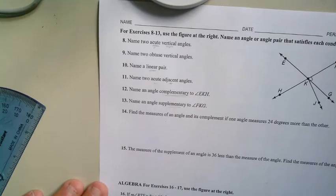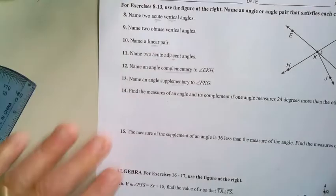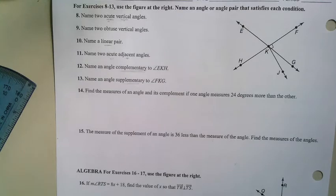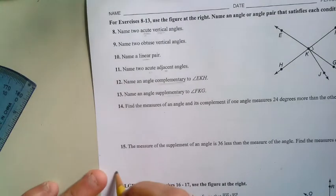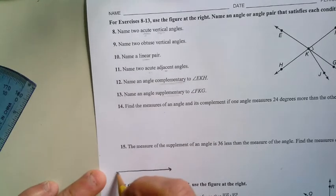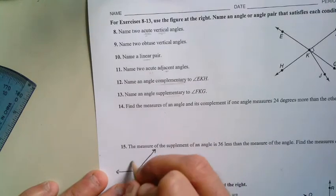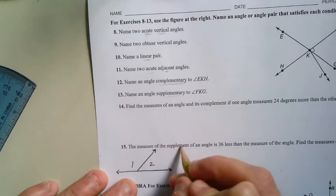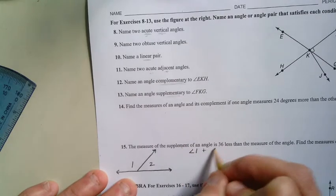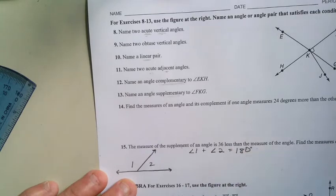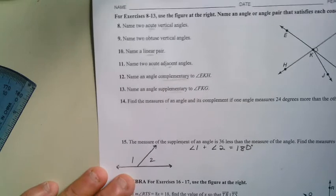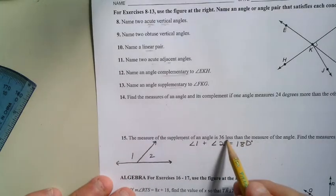Let's work through number 15 together. Here's what it says: The measure of the supplement of an angle is 36 degrees less than the measure of the angle. Find the measure of the angles. So because I know that we're talking about supplementary angles when it talks about the measure of the supplement, I'm going to go ahead and do something like this: angle one and angle two, because I know what supplementary means. It means the sum of two angles has to equal 180 degrees.